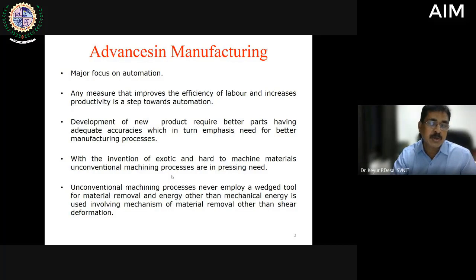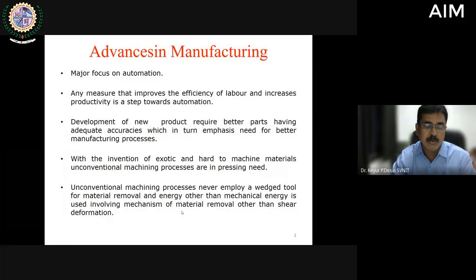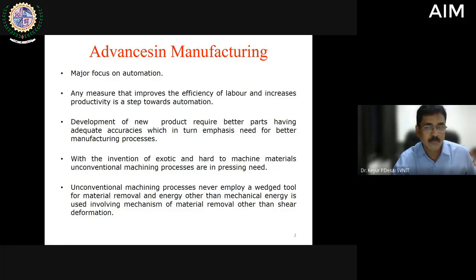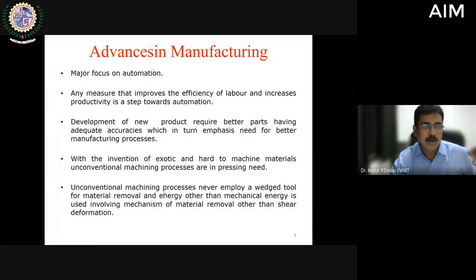Unconventional machining processes never employ a wedge tool which is conventionally used for the removal of material. Energy other than mechanical energy is used for material removal, which is why they are called unconventional machining processes. A couple of decades ago they were known as new technology, but now this technology is relatively older. The type of energy utilized is other than mechanical, meaning the mechanism of material removal is not shear deformation or plastic deformation. One such process is electrical discharge machining.